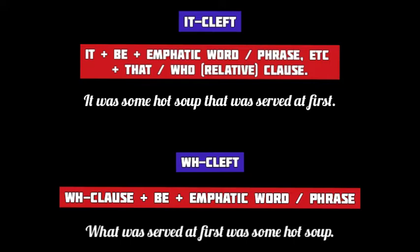For example: 'It was some hot soup that was served at first.' Here, 'hot soup' is the emphasized element. Now look at the structure of a what-cleft sentence: what-clause + verb be + emphatic word or phrase. For example: 'What was served at first was some hot soup.' In this what-cleft, the new information or focus — hot soup — is in the second clause.